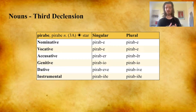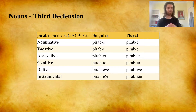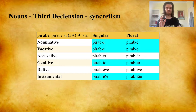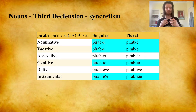Here we have the example Pirabe, which is a noun belonging to the third declension. In the nominative: Pirabe, vocative: Pirabe, accusative: Piraber, genitive: Pirabio, dative: Pirabeve, instrumental: Pirabeve. You'll notice if you compare the nominative singular and plural that they're exactly the same, because the third declension is marked by its syncretism.